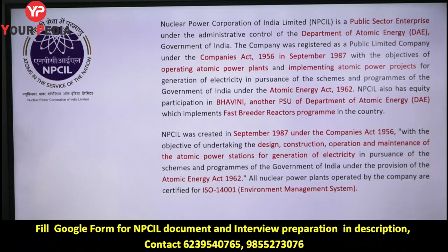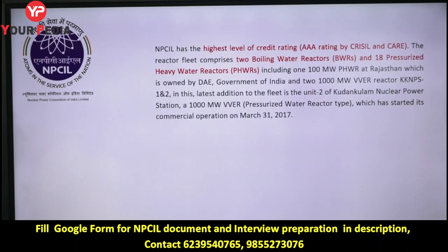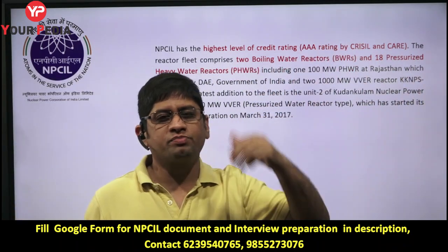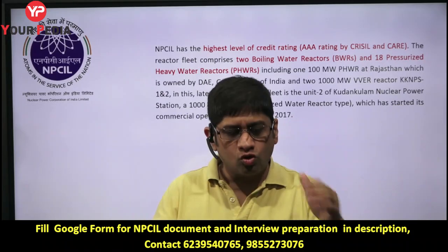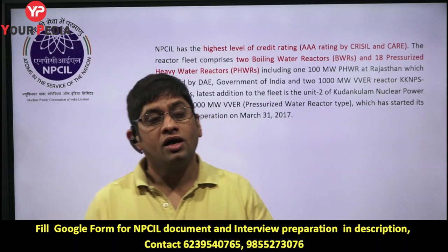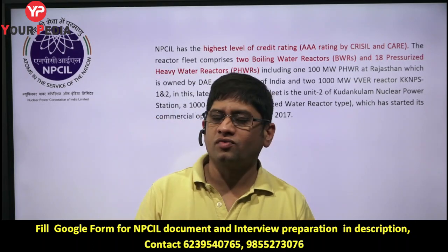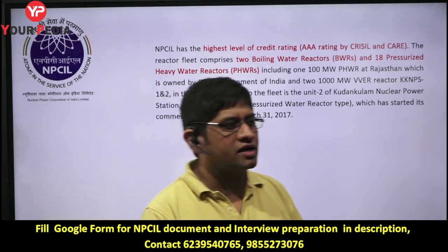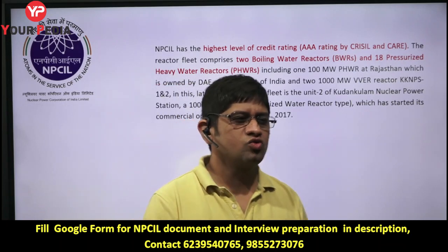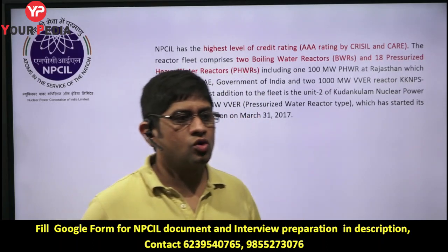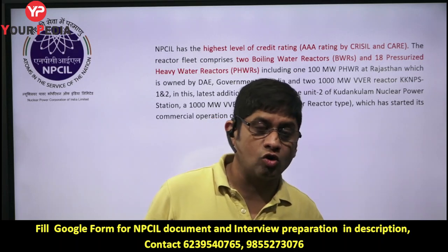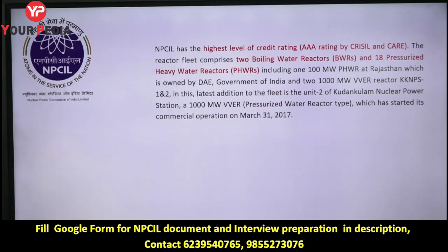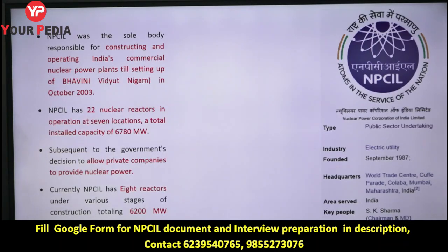NPCIL fulfills ISO 14001 Environment Management System standards — it is an ISO 14001 certified company. It has got the highest credit rating of AAA by CRISIL and CARE. It has two Boiling Water Reactors (BWR) and 18 Pressurized Heavy Water Reactors (PHWR). You should know what a boiling water reactor and a pressurized heavy water reactor are — what heavy water means, what benefit pressurizing it gives, and whether it is used as a coolant. These details are at the end of the document.